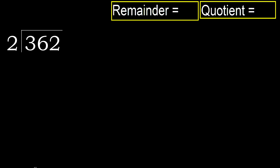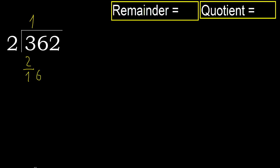362 divided by 2. 3 is not less, therefore with 3: 2 multiplied by which number is nearest to 3 but not greater? 2 multiplied by 2 is 4 — 4 is greater. 2 multiplied by 1 is 2, which is not greater. 3 minus 2 is 1. Next: 16.